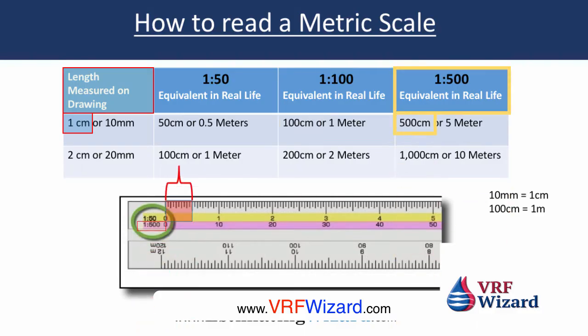If your scale is 1 in 500, every 1 centimeter on your drawing — the left number — is equivalent to 500 centimeters of your building, or whatever component of your building, which is 5 meters. Each of the 500 is broken down into 100 centimeters, each one equivalent to a meter.